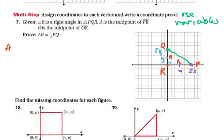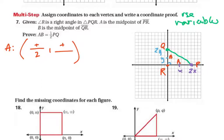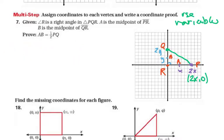The coordinate of A comes from averaging the X's and Y's of P and R. Since half of 2X is X, A is at (X, 0). B is the midpoint of QR, averaging Q=(0, 2Y) and R=(0, 0), giving B at (0, Y). So now we have all four coordinates: P=(2X, 0), R=(0, 0), Q=(0, 2Y), A=(X, 0), B=(0, Y).